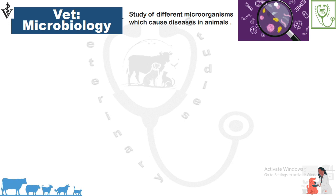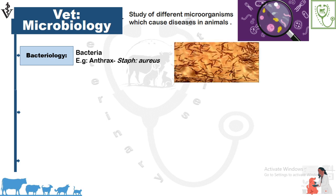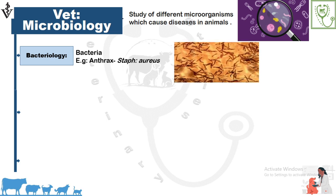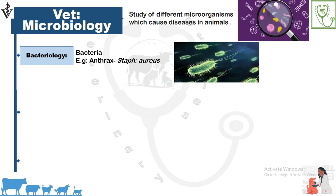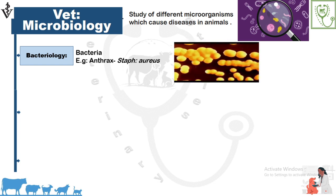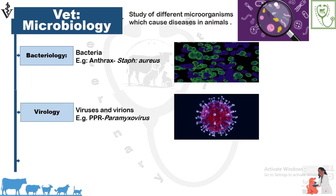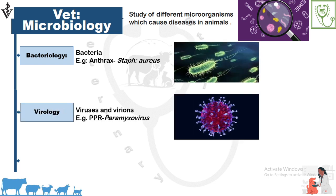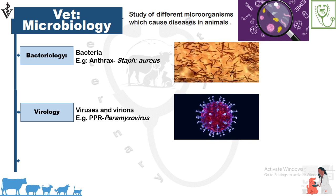Veterinary microbiology is the scientific study of microscopic organisms which cause diseases in animals, such as bacteria, viruses, and fungi. Bacteriology is the study of bacteria that cause disease in animals — for example, anthrax, which is caused by Bacillus anthracis. Virology is the study of viruses and virions which cause diseases in animals.